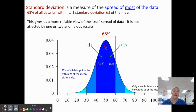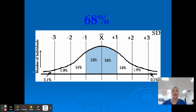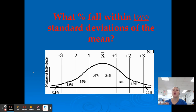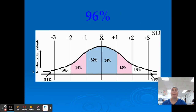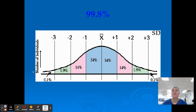Two standard deviations equals 95% of the data. What percent of the population is found within one standard deviation of the mean? 68% of our population. What percent falls within two standard deviations of the mean? That is 95-96% of our data. And what percent would fall within three standard deviations of the mean? 99.8%. We can never quite say 100%, but 99.8% are going to fall within three standard deviations of that mean.